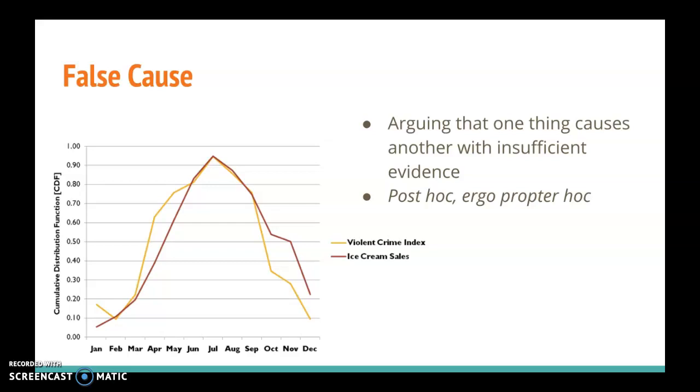It's really hard to commit crime when it's too cold outside or when it's snowing, so crime tends to increase during the summer months, and no one wants to eat ice cream when it's cold outside or snowing, so they tend to eat it when it's warmer.